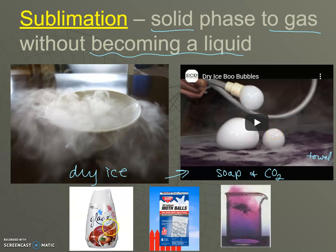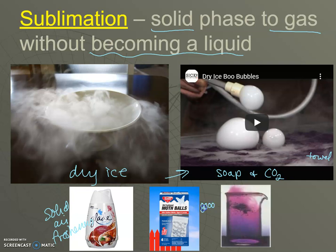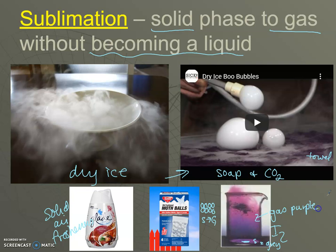You also see sublimation with solid air fresheners — open them up and there's a solid material inside. Moth balls — dichlorobenzene — go directly from a solid to a gas, giving off vapor that keeps moths away. Iodine goes directly from a solid, which is gray, to a gas that is a beautiful purple color. In all these cases, nothing gets wet because nothing passes through the liquid phase.